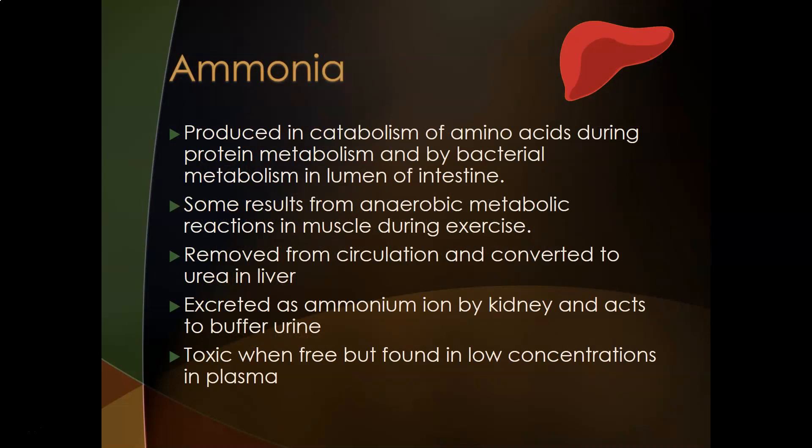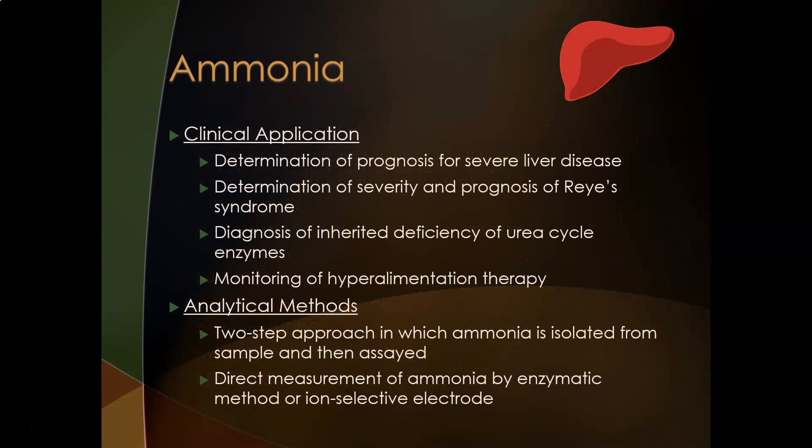The second NPN compound for this video is ammonia. Ammonia is produced by catabolism of amino acids during protein metabolism and by bacterial metabolism in the intestine. Some ammonia results from anaerobic metabolism in muscle during exercise. It is usually removed from circulation and converted to urea in the liver, and excreted as the ammonium ion by the kidneys, which also plays a role in buffering urine and acid-base balance. It is toxic when freely circulating in the blood, but normally found in low concentrations.